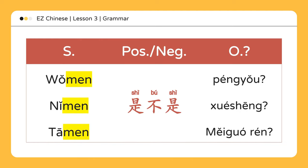A question can be formed in the following manner: subject plus 是不是 plus object. 我们是不是朋友? Are we friends? 你们是不是学生? Are you students? 他们是不是美国人? Are they Americans?